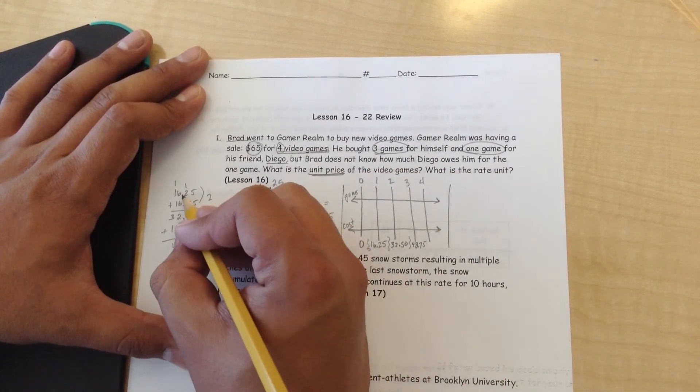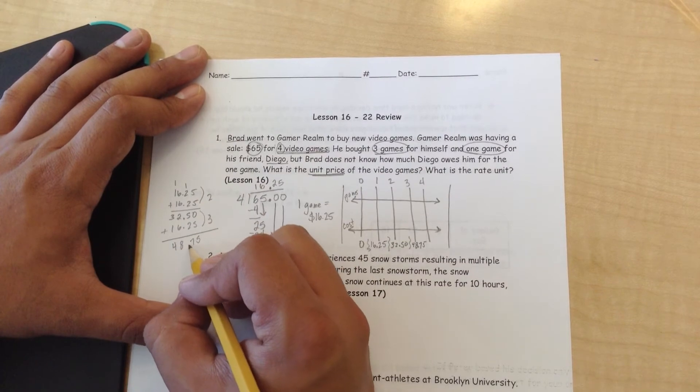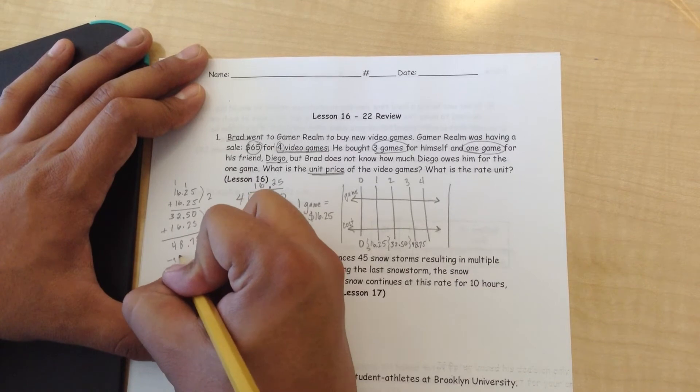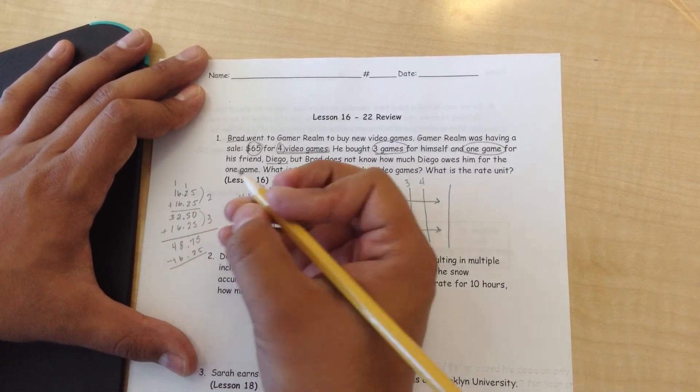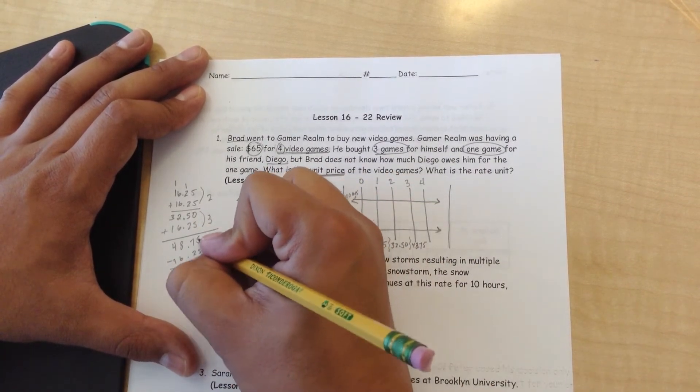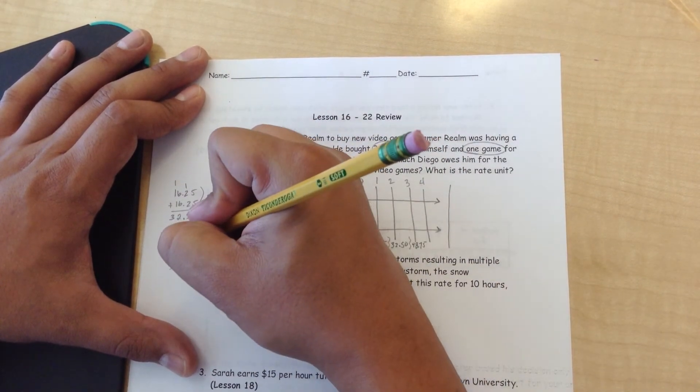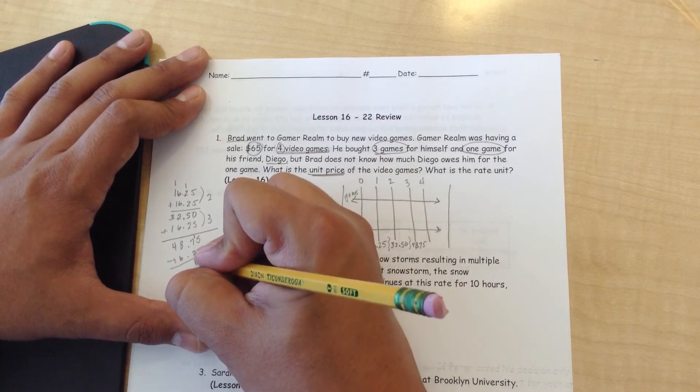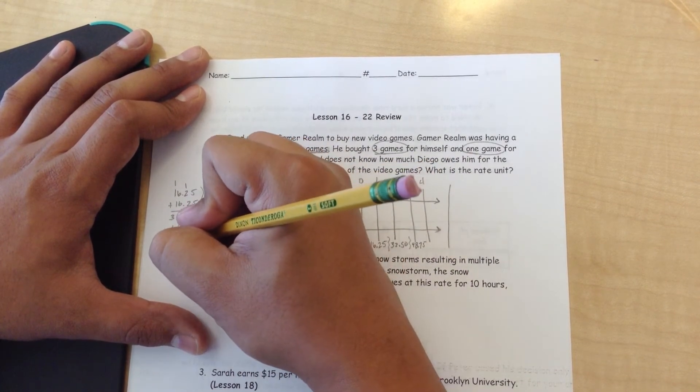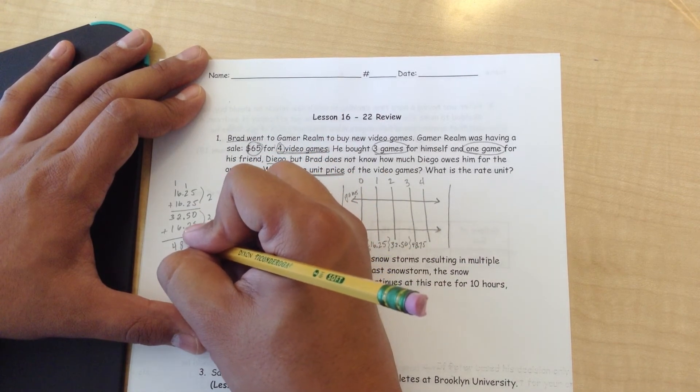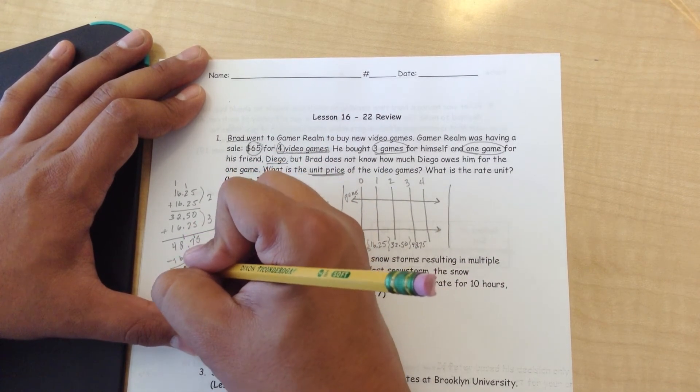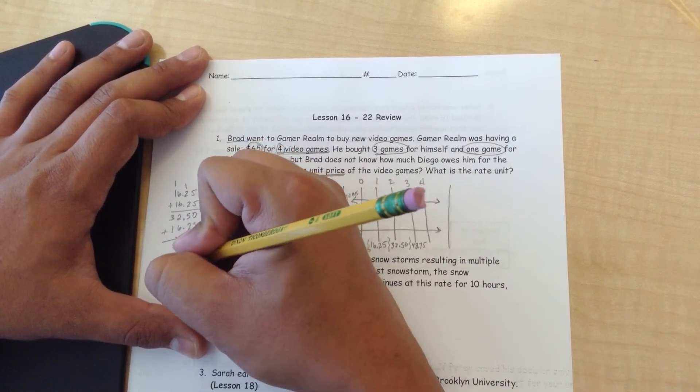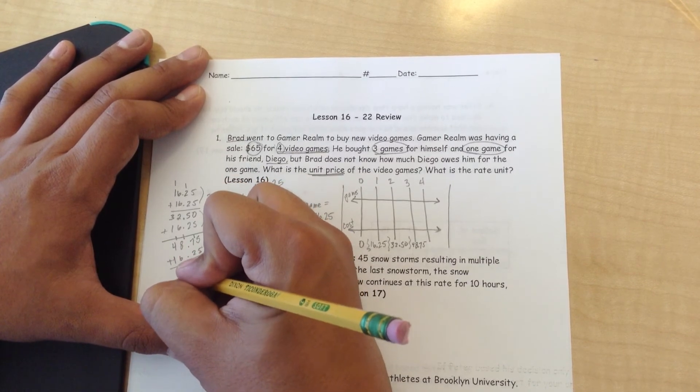And now let's confirm to see if I add 16.25 plus 48.75, if it equals 65. Five plus five is ten, so I put a zero there, carry the one. Two plus seven is nine, plus one is ten. Carry the one over again. Six plus eight is fourteen, plus one is fifteen. Put the five there, carry the one. One plus four is five, plus one is six, giving us $65.